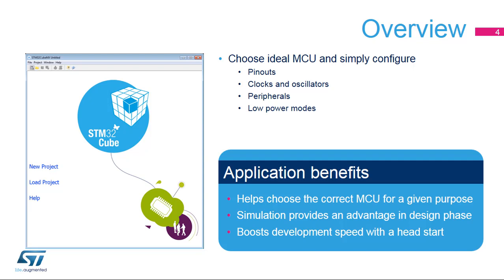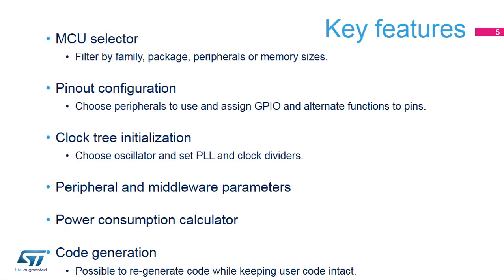It uses a rich library of data from the STM32 microcontroller portfolio. The application is intended to ease the initial phase of development by helping developers select the best product with regards to features and power. The user interface is built around a natural workflow of choosing a suitable MCU, selecting the required peripherals, and assigning PIN configurations. The power consumption calculator aids in designing an efficient system. Finally, the project initialization code can be generated and potentially regenerated while keeping the user code intact.